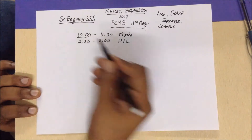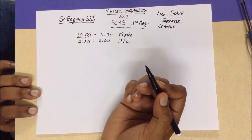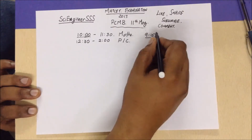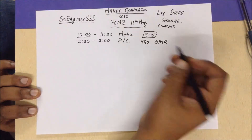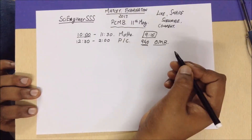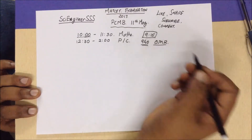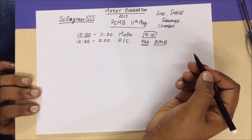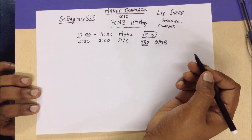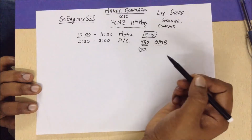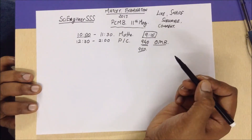Even if the exam timing is 10 AM, you have to reach before that. The gates for the examination hall will be opened at 9:15, so you have to reach well before that. At 9:40 they will be giving you your OMR sheets on which you have to write your answers — details like your roll number need to be filled. At 9:50 they will be giving you your question paper booklet.